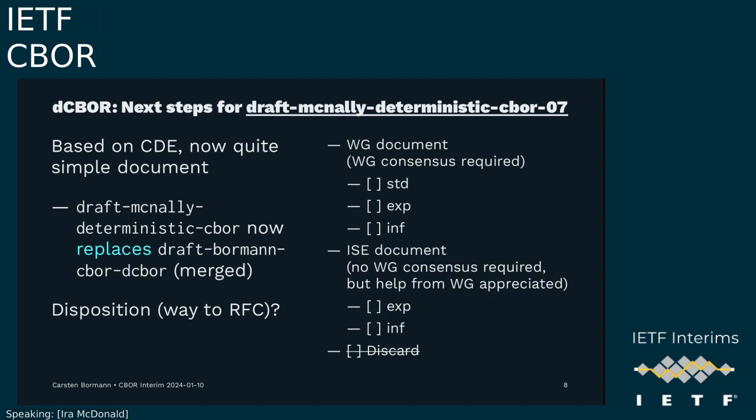I'd like to point out that both the November and January drafts of CDE do not say 'Proposed Standard intended status' — they say 'Best Current Practice.' That is not Standards Track; it is related but different. Best Current Practice actually makes sense to me for CDE. This hasn't been discussed here, and I think either CDE should change to Proposed Standard — which I think would actually be less appropriate than BCP — or we should expand this discussion a little.